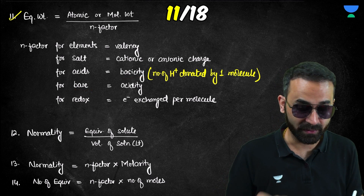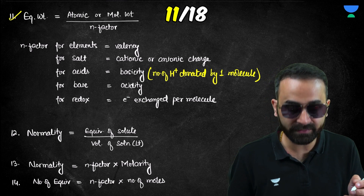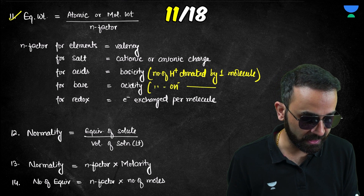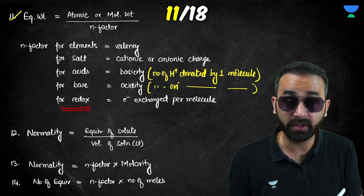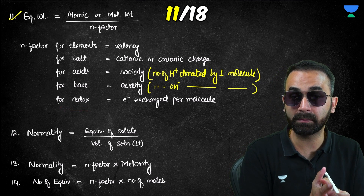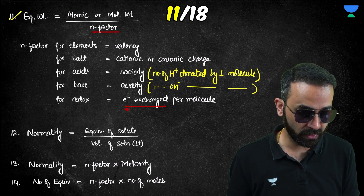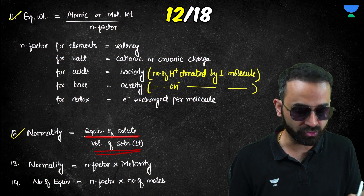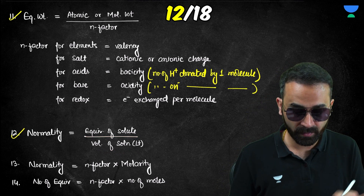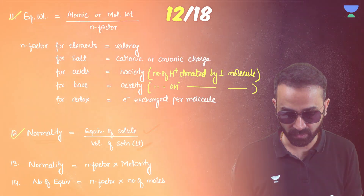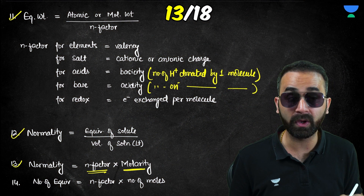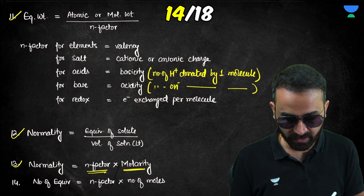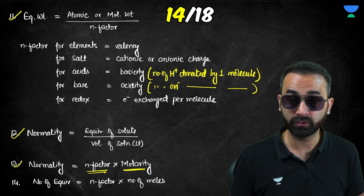For bases, the n-factor equals the acidity — the number of OH⁻ ions donated (or H⁺ absorbed) per molecule. For redox reactions, where oxidation and reduction occur simultaneously, the n-factor is the number of electrons exchanged per molecule. Normality is the number of equivalents of solute divided by volume of solution in liters, and equals n-factor times molarity. Similarly, number of equivalents equals n-factor times number of moles.